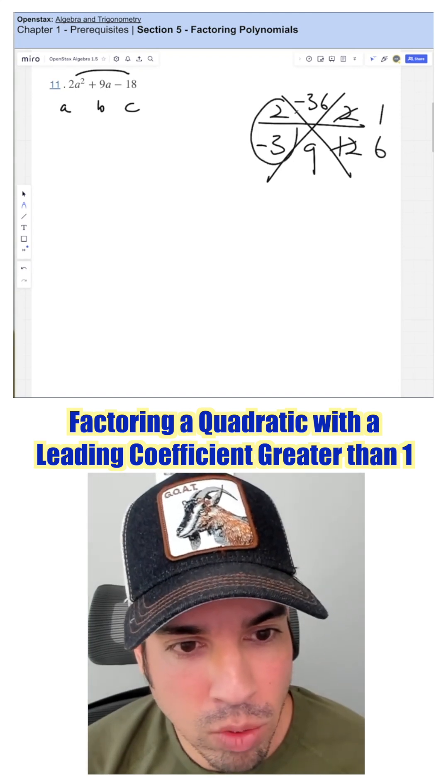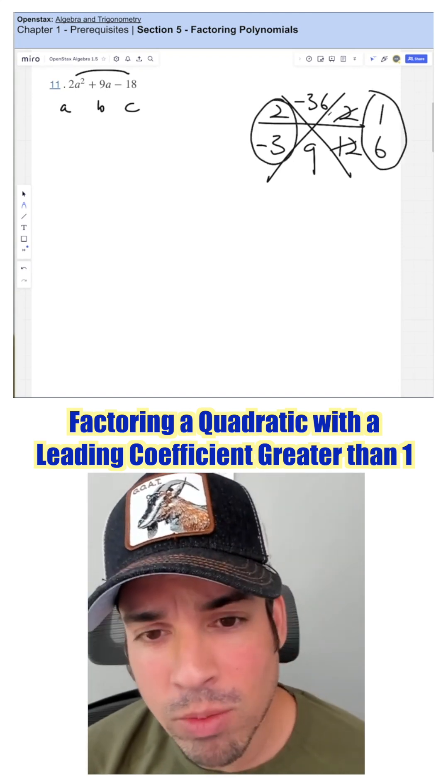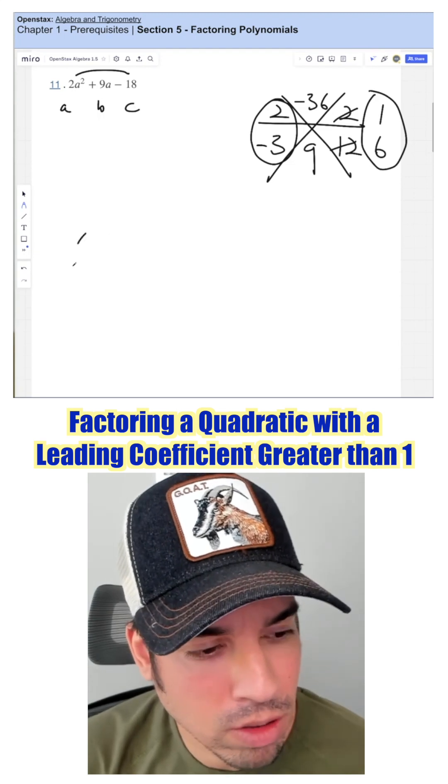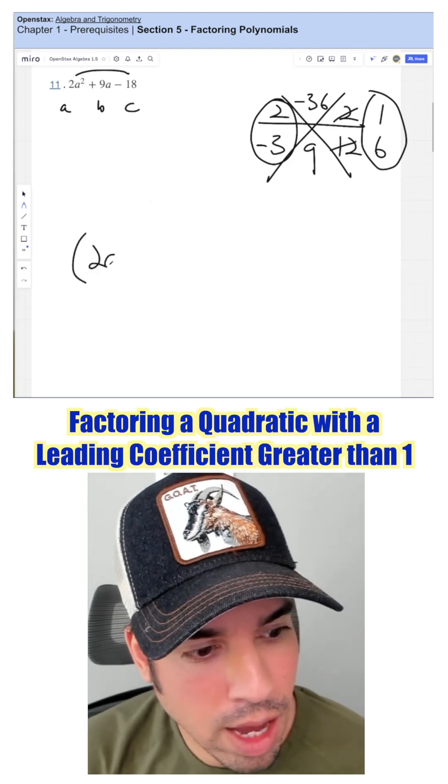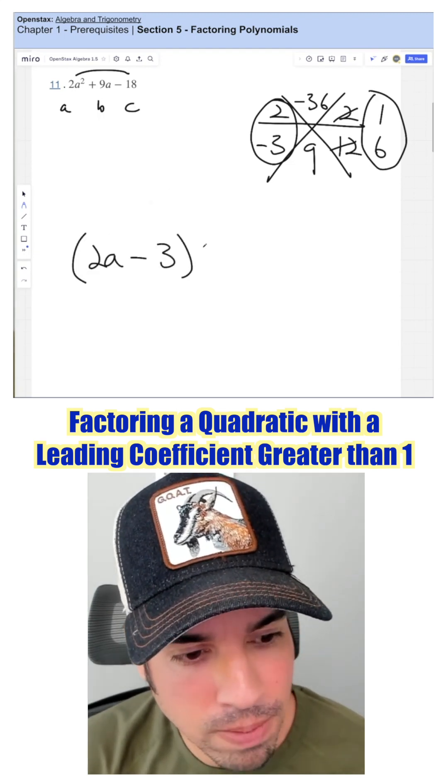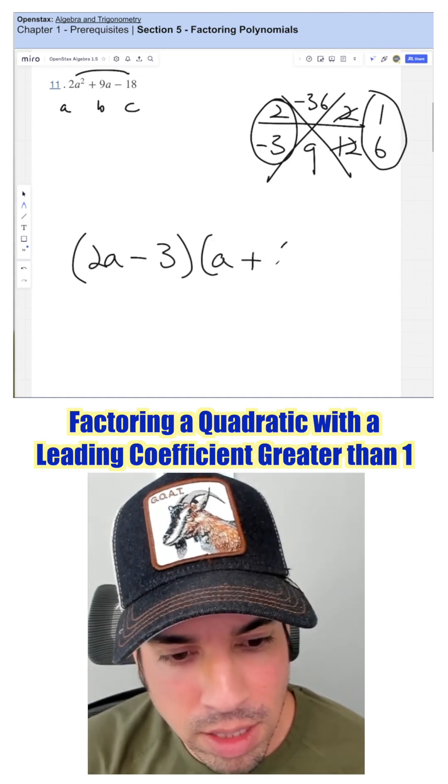Now I've got binomial 1 and binomial 2. And the top number is going to be paired with the variable. So now it's going to look like 2A minus 3 times 1A, or just A, plus 6.